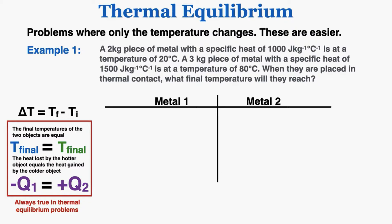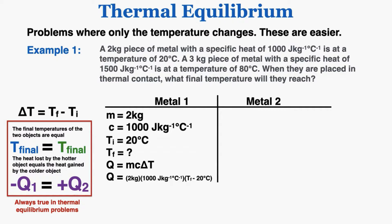Example 1: we're only dealing with temperature change. A 2 kilogram piece of metal with a specific heat of 1,000 joules per kilogram degree Celsius is at 20 degrees Celsius. A 3 kilogram piece of metal with a specific heat of 1,500 joules per kilogram degree Celsius is at 80 degrees Celsius. When they are placed in thermal contact, what final temperature will they reach? I need to use Q = mcΔT along with the thermal equilibrium conditions: energy lost by one equals energy gained by the other, and final temperatures are the same.